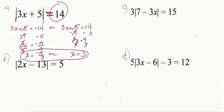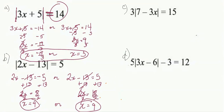In part B, we already have the isolated absolute value. So we have 2x minus 13 equals negative 5, or 2x minus 13 equals 5. Solve these independently. You can pause your video and try it yourself. Your solutions should be x equals 4 or x equals 9.